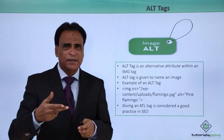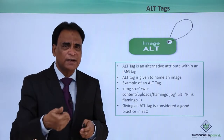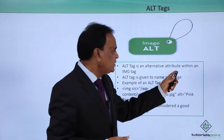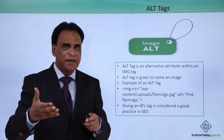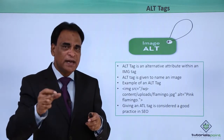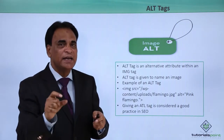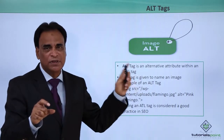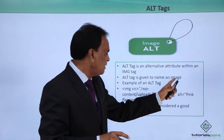Alt tag — besides resizing and optimizing the image, the other key factor in image optimization is giving a name and identity to your image. Alt tag is an alternative attribute within an image tag. When designers and developers design the website and upload it to the server, they give a tag to it — that is the identity and name of the image. Alt tag, or alternative tag, is an extremely important factor in image optimization as far as search engine optimization is concerned.